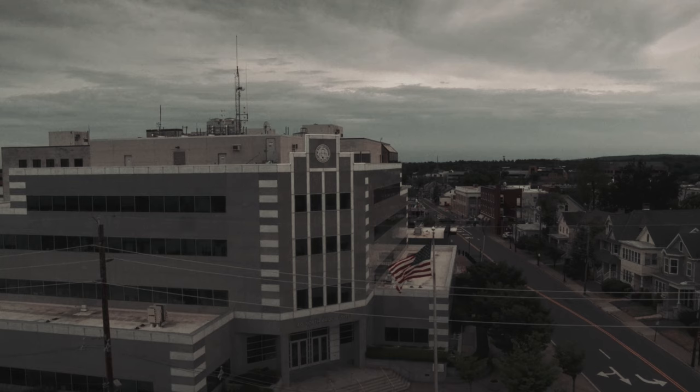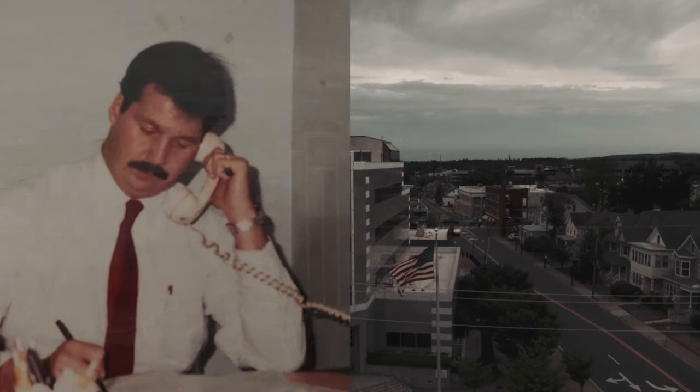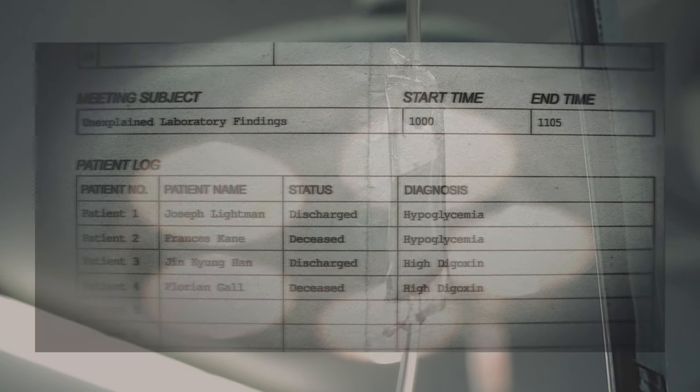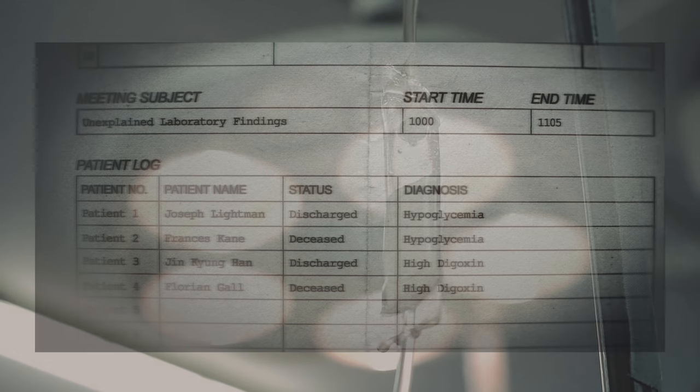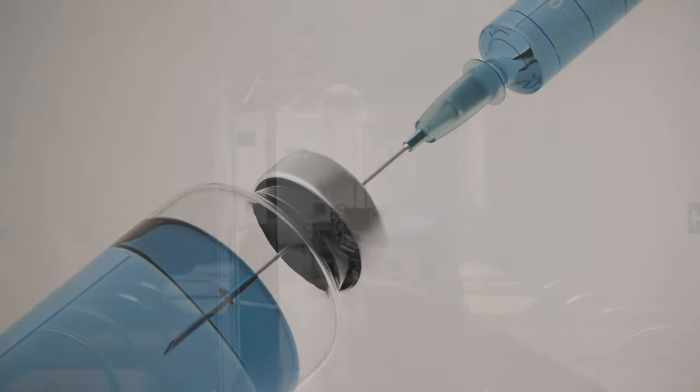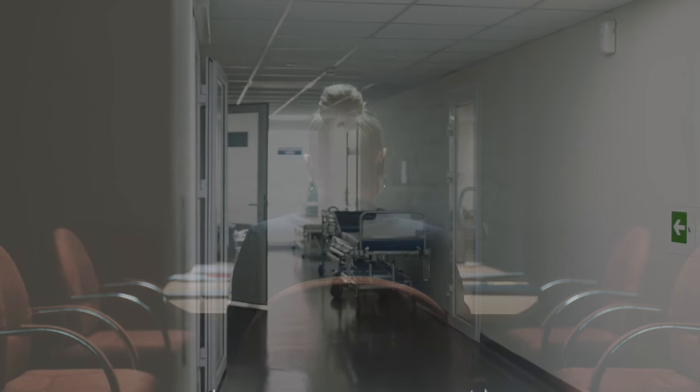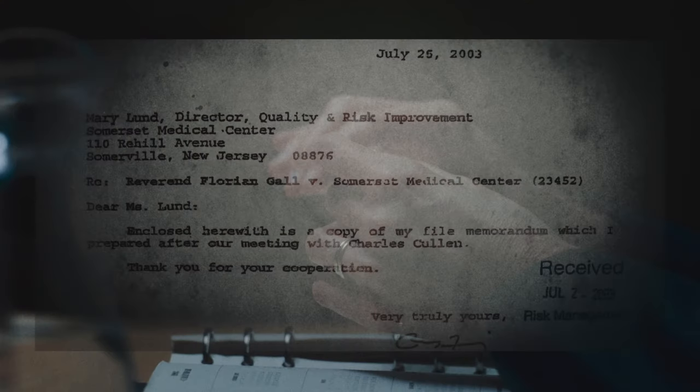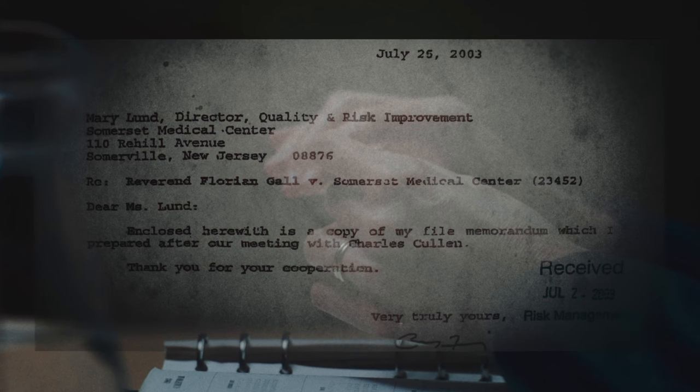On October 3rd, 2003, two Somerset police detectives, Tim Brown and Danny Baldwin, learned that the suspicious death of a patient was being investigated at the local medical center. The detectives requested to meet with representatives of the hospital. It turned out that, in fact, there had been four suspicious deaths: two due to a sharp drop in blood sugar or hypoglycemia, and two due to an unexplained overdose of digoxin. The medical center's risk manager and spokeswoman, Mary Lawn, told the police that their internal investigation had not turned up anything suspicious. She handed the police some of the documents that the center had managed to collect during their investigation.